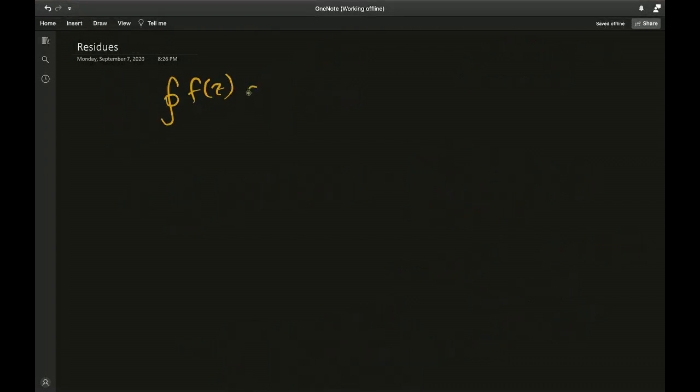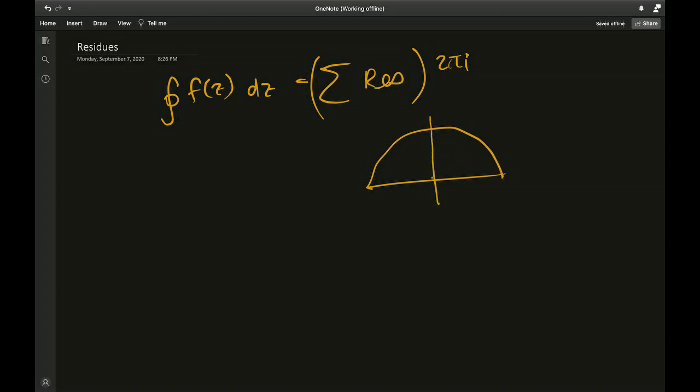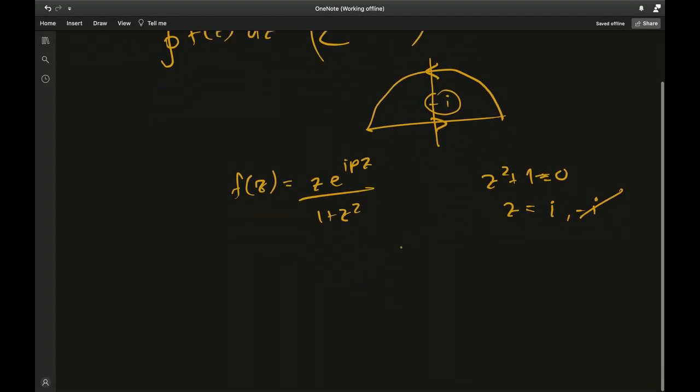When we calculate this contour integral separately, we talk about the sum of residues multiplied by two pi i. For residues you need poles or singularities that are within the contour. Look at the function again: f was z times e to the ipz over 1 plus z squared. The only point inside the contour where f becomes undefined is when z squared plus 1 equals 0, which means z has to be i or negative i. But negative i is not inside the contour so ignore that. z equals i is the point we're concerned with.